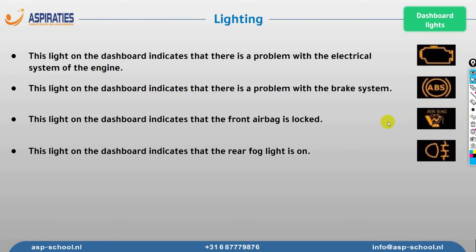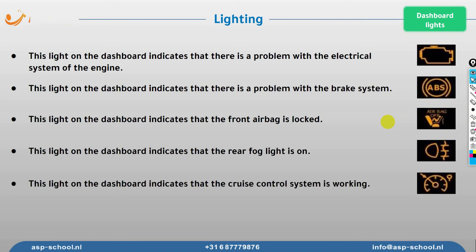This symbol tells me the rear fog light is on, and this one tells me the cruise control is on. Cruise control is the system that keeps the vehicle running at a certain speed without you pressing the accelerator — you set a speed and the car maintains it. More advanced systems can slow down or speed up depending on the car in front of you, and some can even read road signs and adjust speed automatically.